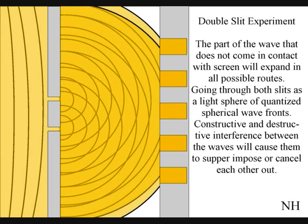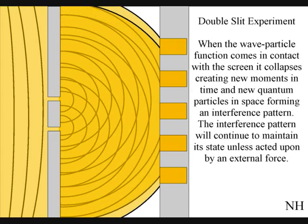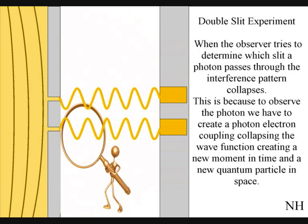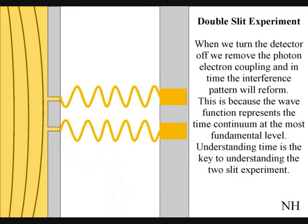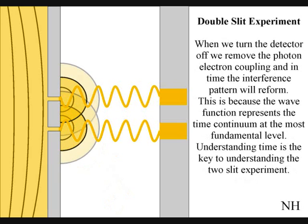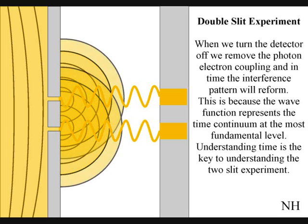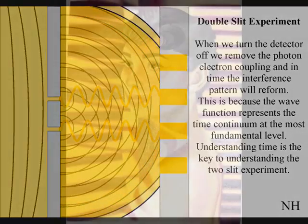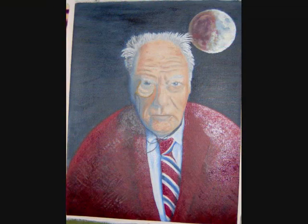When the observer turns on the detector to determine which slit a photon passes through, the interference pattern collapses. At that moment in time, the interference pattern disappears, because to observe the photon we have to physically create a photon-electron coupling, collapsing each wavefront into a new quantum particle that will have its own position in space and time that the wavefront never had before the collapse. If we turn the detector off, we remove the photon-electron coupling, and in time the interference pattern will reform. Just like in Newton's first law of motion, the interference pattern will continue to maintain its state unless acted upon by an external force.